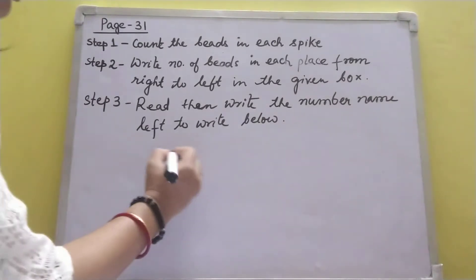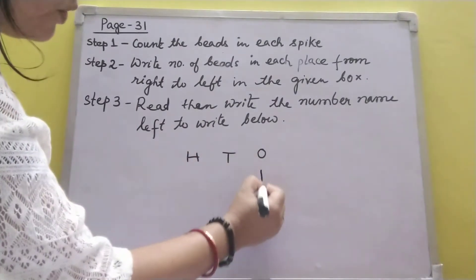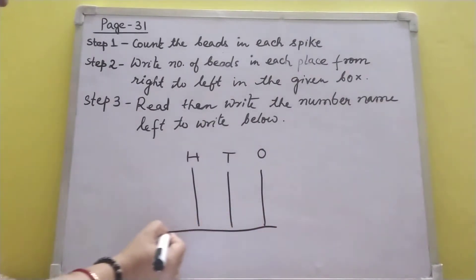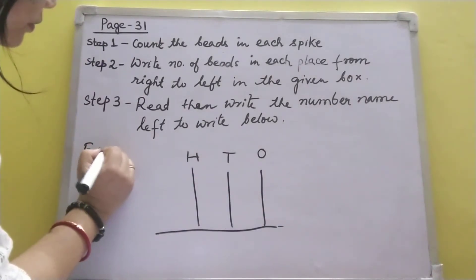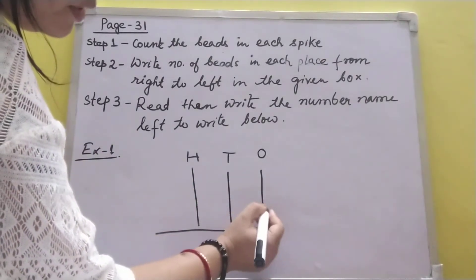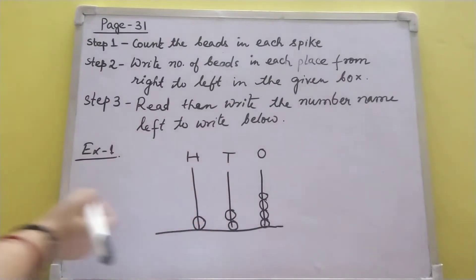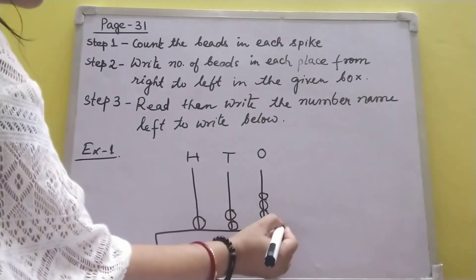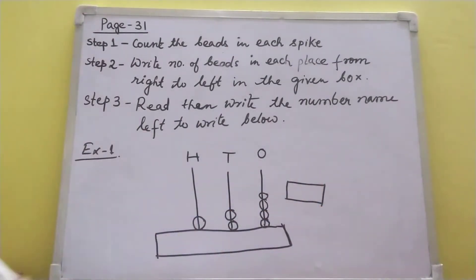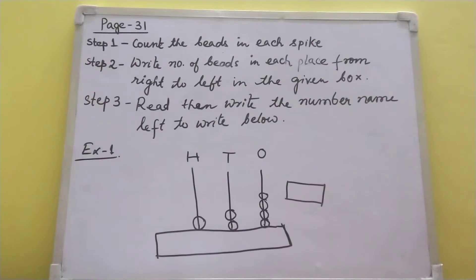Now the question — let me write a question. Like this, you have it in your textbook. You can see in your textbook this question is given. Example 1: a question is given like this, with one box for numerals and another box for the number in words.